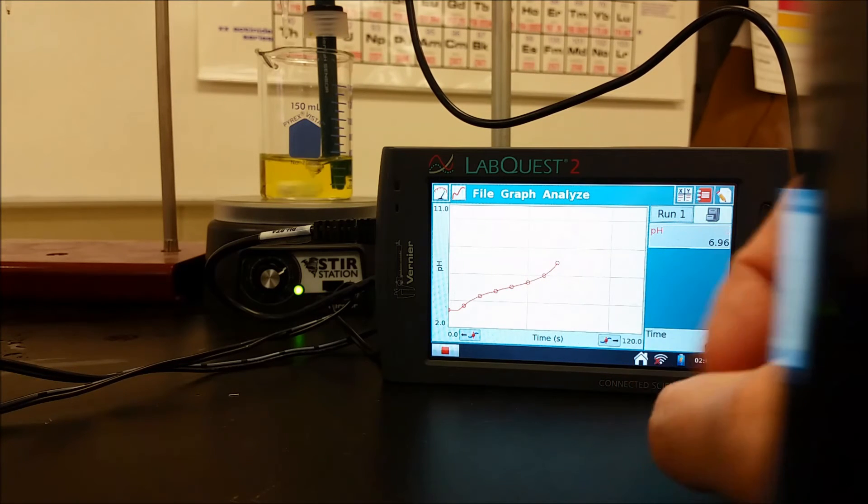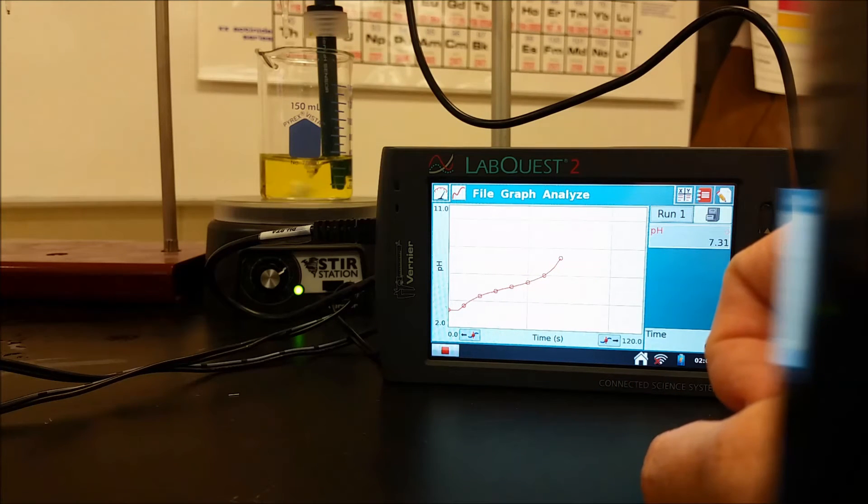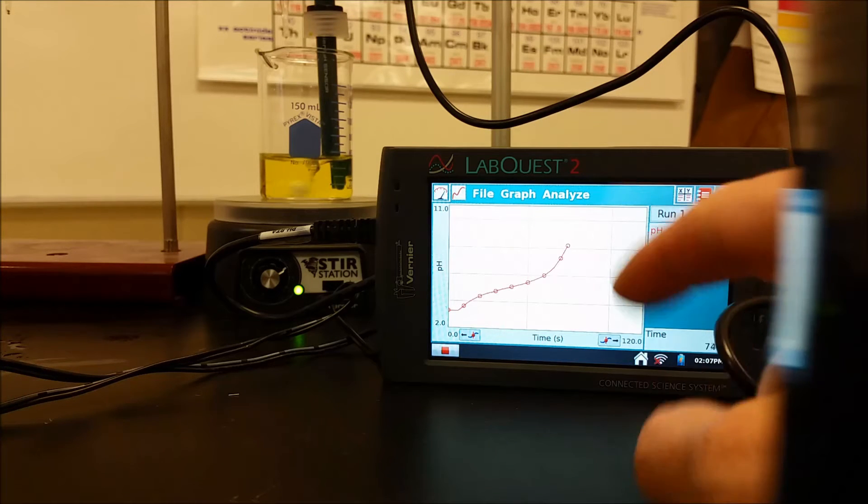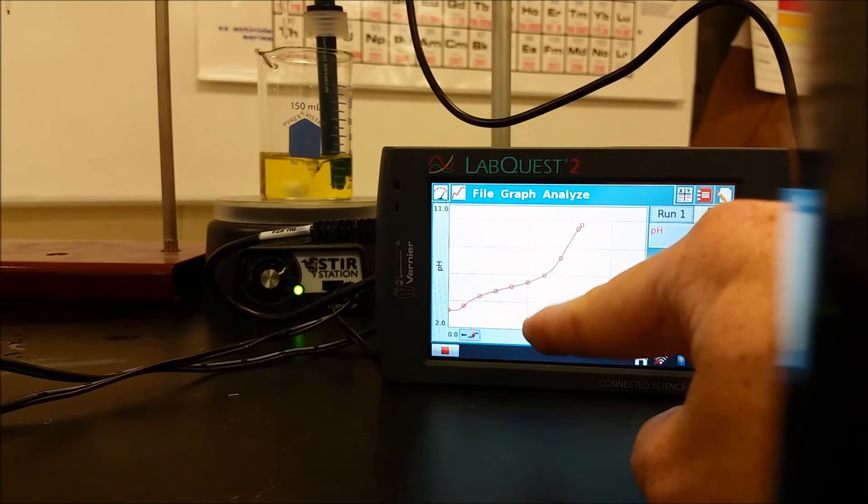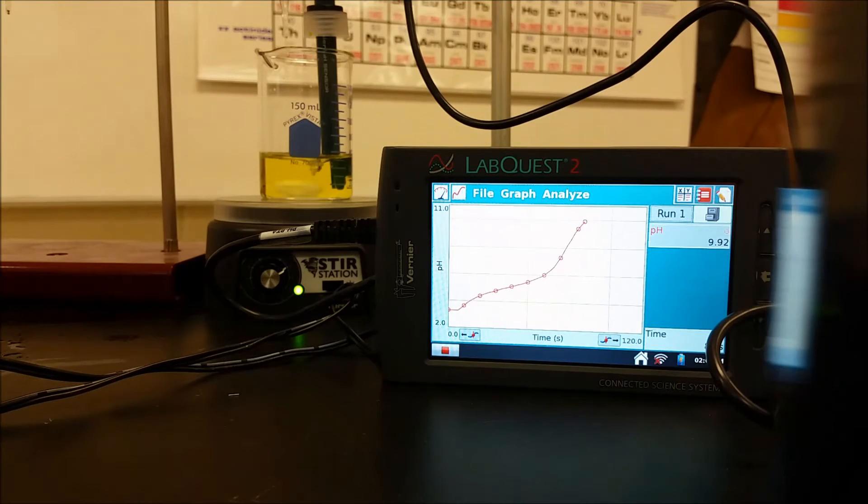Our equivalence point is going to be when there's the large inflection. So you can see here that the slope is increasing very rapidly all of a sudden. That is our equivalence point right now. And so if you trace that down to the bottom of the screen, that's the volume of base required to get to the equivalence point compared to where our endpoint told us the reaction was over. So by choosing the wrong indicator, our answer is off by a significant quantity.